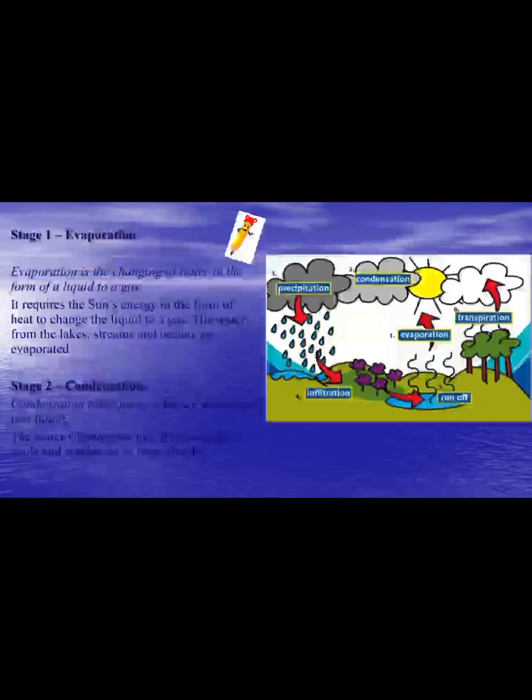Evaporation is stage one: the changing of liquid water to gas or steam. It requires energy from the sun to change the liquid to gas, because the particles of the liquid have less energy than particles of a gas. To turn liquid water to gas you need to give it energy — that energy comes from the sun, and then the particles have more energy and change into gas.